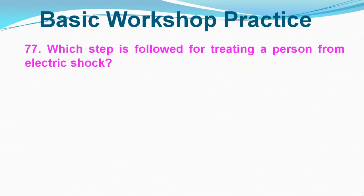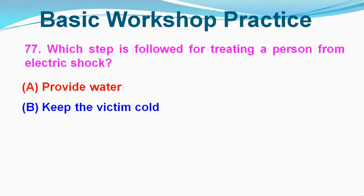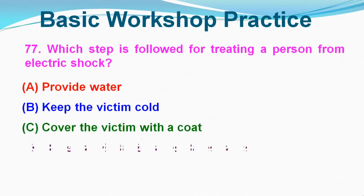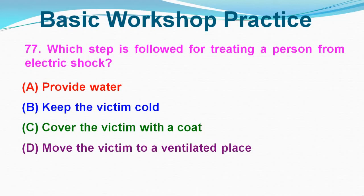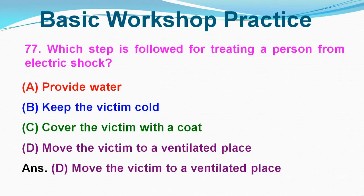Question No. 77: Which step is followed for treating a person from electric shock? Option A: Provide water, Option B: Keep the victim cold, Option C: Cover the victim with a coat, Option D: Move the victim to a ventilated place. Correct answer is Option D, Move the victim to a ventilated place.